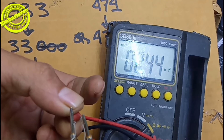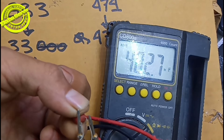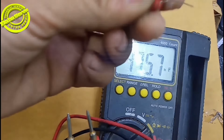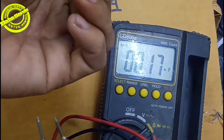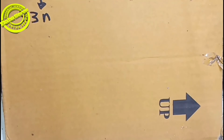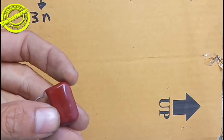Kita lihat hasil ukurnya: 482 Nanofarad. Berarti ini pun sama, lebih bagus dari tulisannya. Awal adalah angka Pico, setelahnya kita ubah menjadi Nano.